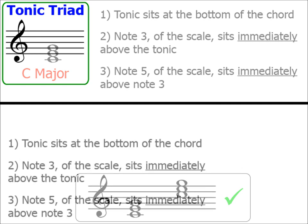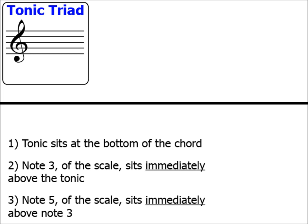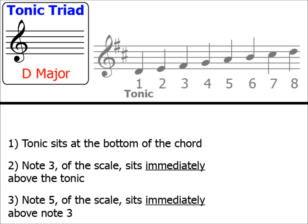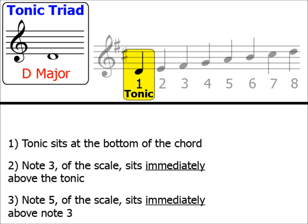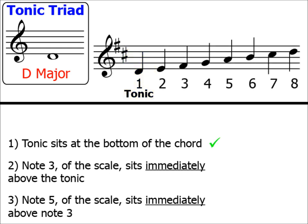Let's have a look at a tonic triad for another key: D major. Here's our scale of D major, and I've numbered each note of the scale. We take note number 1, the tonic — which is note D — and place it at the bottom of our tonic triad. Step 1 complete. Step 2: we take note number 3, which is F sharp. Don't forget to keep one eye on the key signature — lots of students forget this and pop an F rather than an F sharp into their tonic triad. Let's add the F sharp, ensuring it sits immediately on top of the tonic. Step 2 complete.